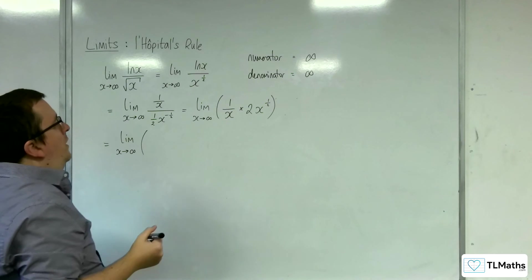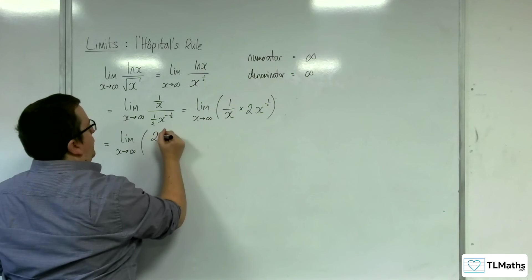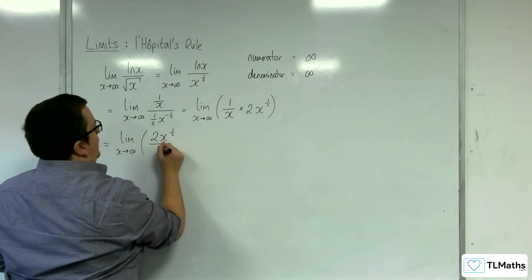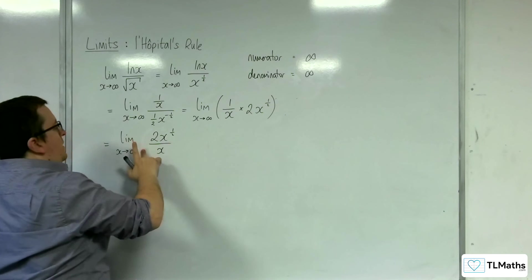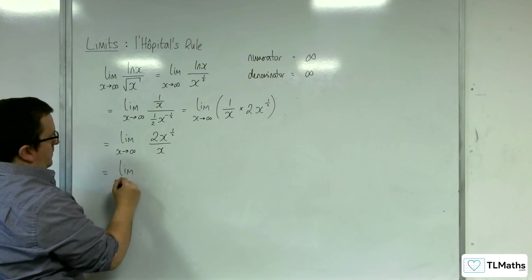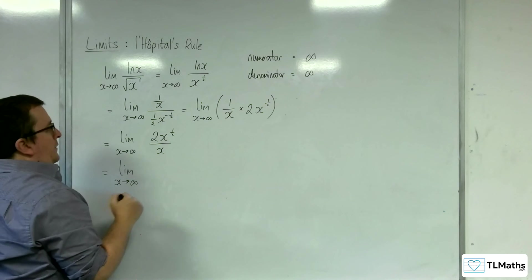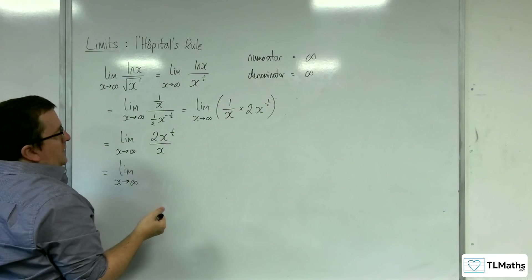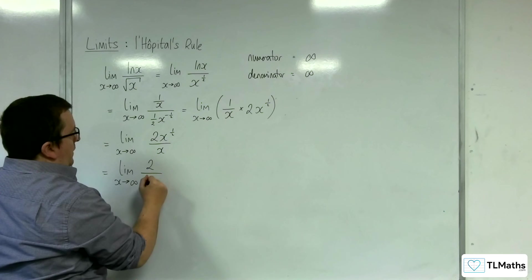So what have I got? I've got 2x to the half over x. Well, I don't need that bracket. And so, if I divide top and bottom by x to the half, I'm going to get 2 over x to the half.